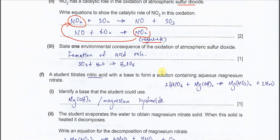Part three. State one environmental consequence of the oxidation of atmospheric SO2. We know this always forms acid rain. SO2, after it gets oxidized, forms SO3. SO3 with water, the moisture, will form H2SO4, and H2SO4 is acid rain. The answer is formation of acid rain.